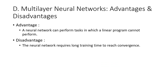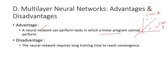The advantage of a multi-layer neural network is that it can perform tasks that a linear program cannot. While a single perceptron can only classify linearly separable data, a multi-layer neural network can classify non-linearly separable data. The disadvantage is that it requires long training time to reach convergence because of the many layers involved, and it also requires high computational power compared to a single perceptron.